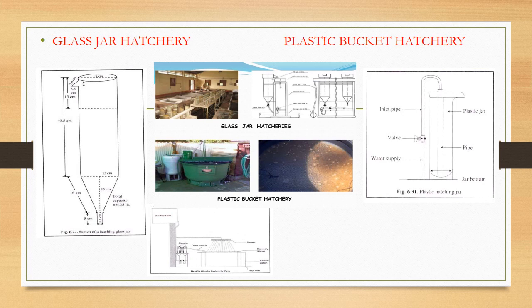In modern hatchery, we first talk about the glass jar hatchery. It is India's first transparent modern hatchery method. It has a breeding tank, incubation tank, hatchery unit, and spawnery unit. The tank capacity is approximately 5,000 to 5,500 liters.